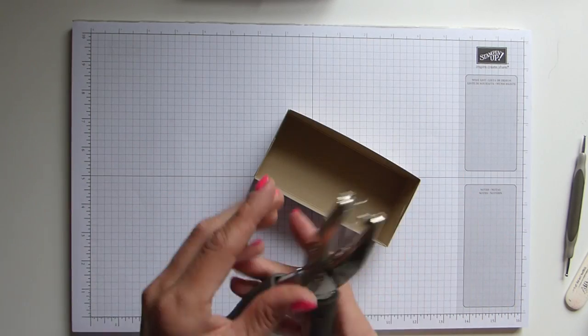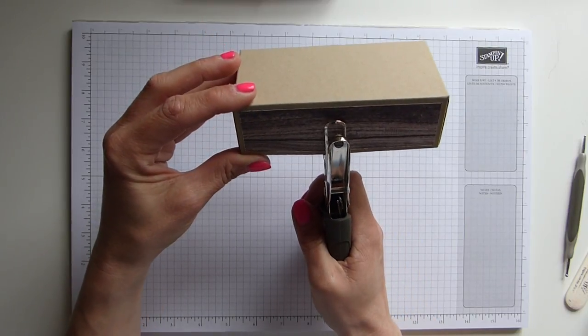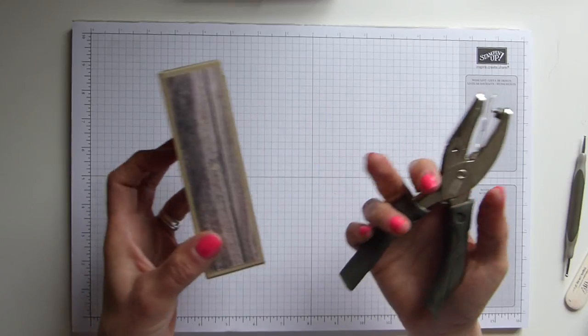And then you need your one eighth of an inch circle punch. And you can either measure this or eyeball it. Doesn't really matter. Punch a hole through the top there.